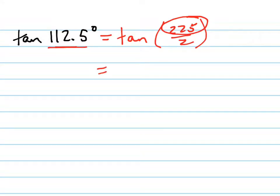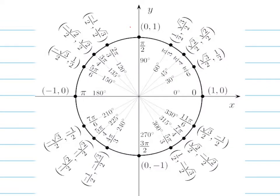So this equals 1 minus the cosine of 225 all over the sine of 225. Now if we look at our unit circle, my unit circle at 225, that's right here, the sine and the cosine are both negative root 2 over 2.